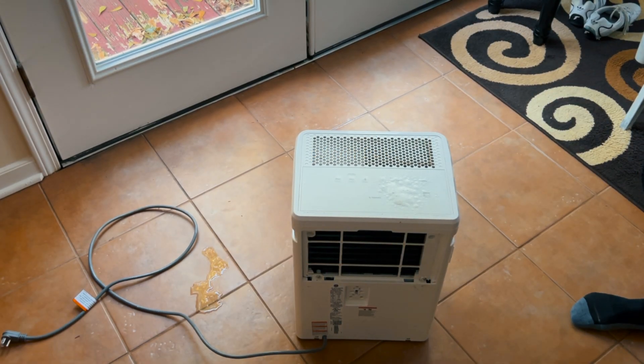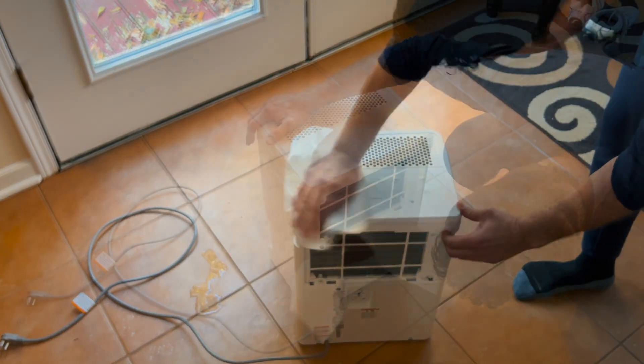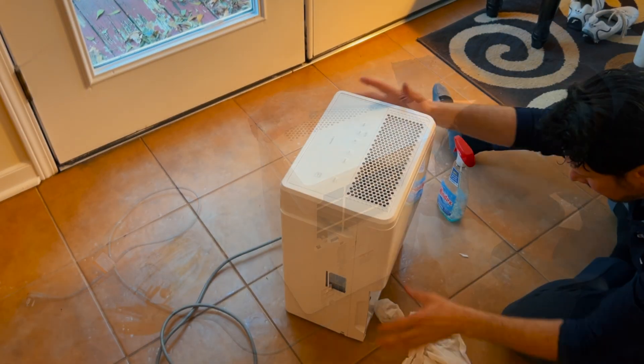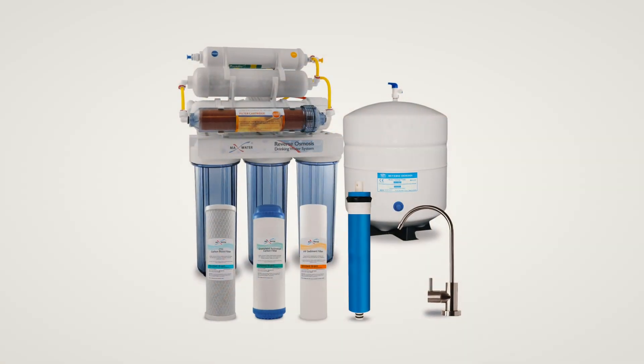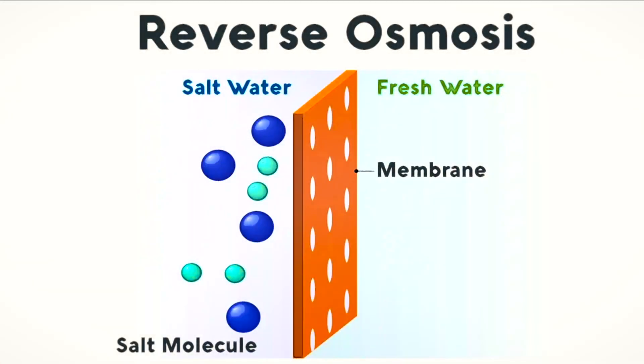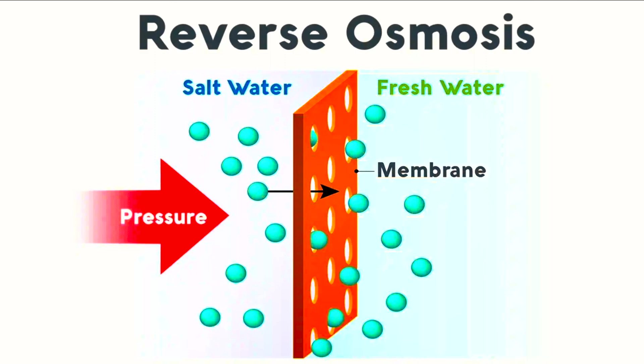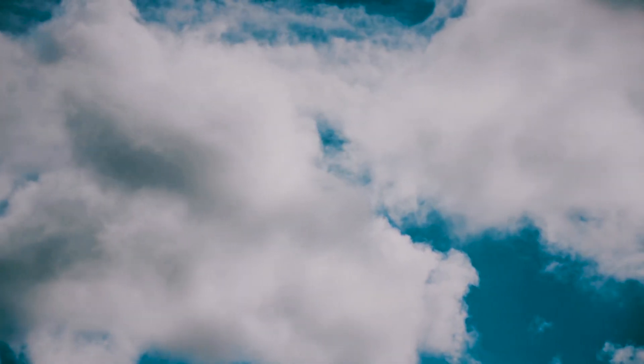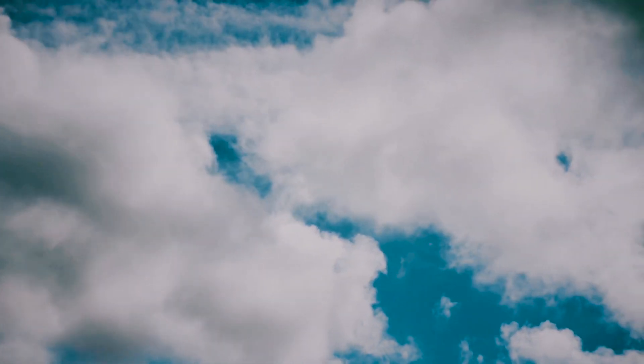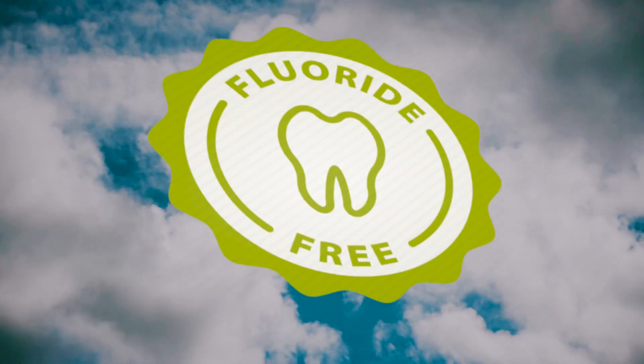I have this dehumidifier from when my crawl space got flooded so I will clean it up and put it to good use. Reverse osmosis can only remove about 85 to 90 percent of the fluoride from the water. But as far as I know there is no fluoride in the air, which means water out of the air is fluoride free.